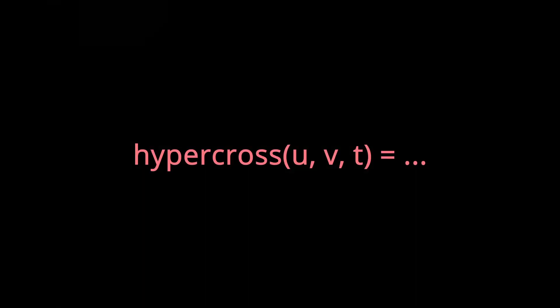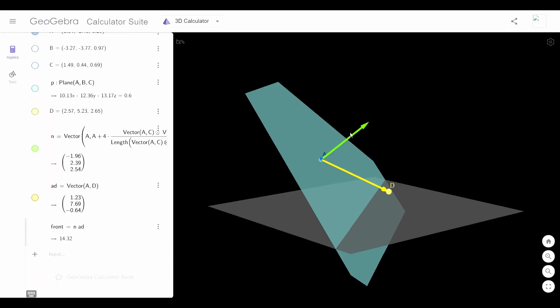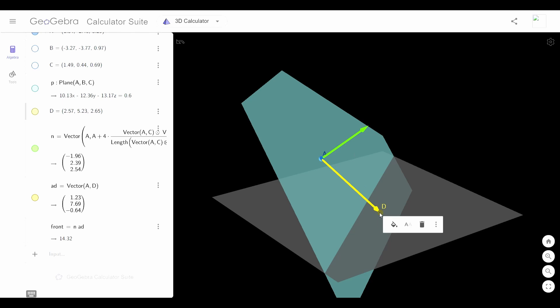If the calculation for the hyper cross product is very long I'm gonna just leave it in description. Also one more side note if you want to find on which side of a plane a point is, there are better methods than using the hyper cross product so just keep that in mind. For example here I'm having a plane normal to the plane and a vector from A to D and taking the dot product which also works.